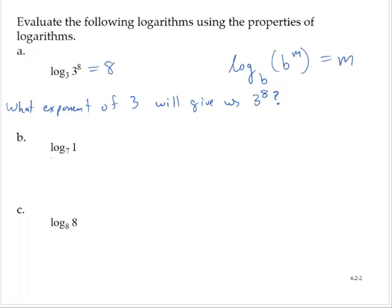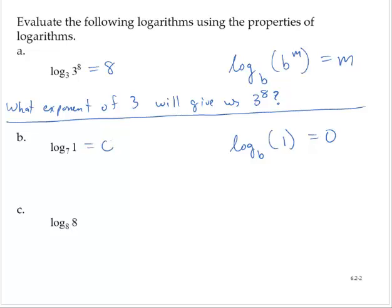Exercise B: The log base 7 of 1. We have a property of logarithms that says the log base b of 1 is 0. Therefore, the log base 7 of 1 is 0.